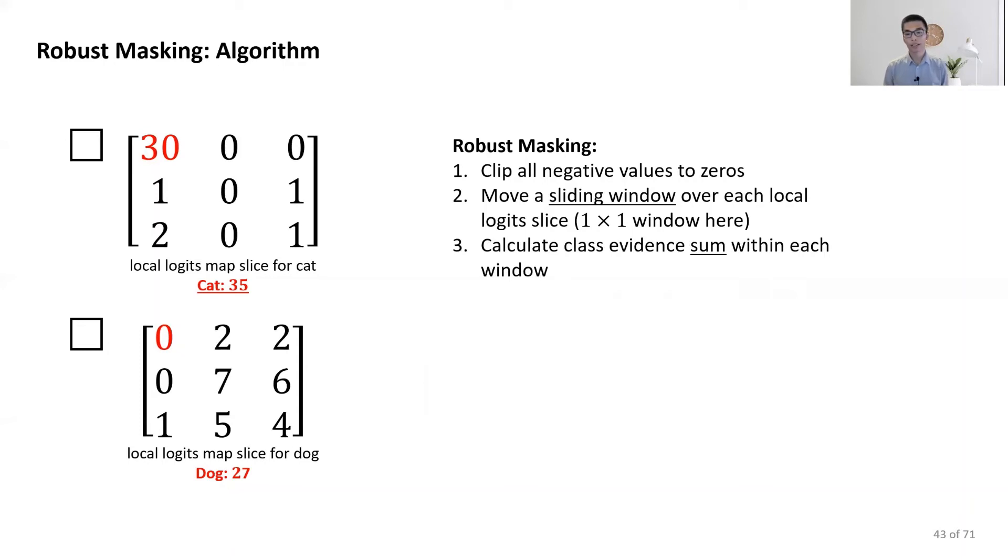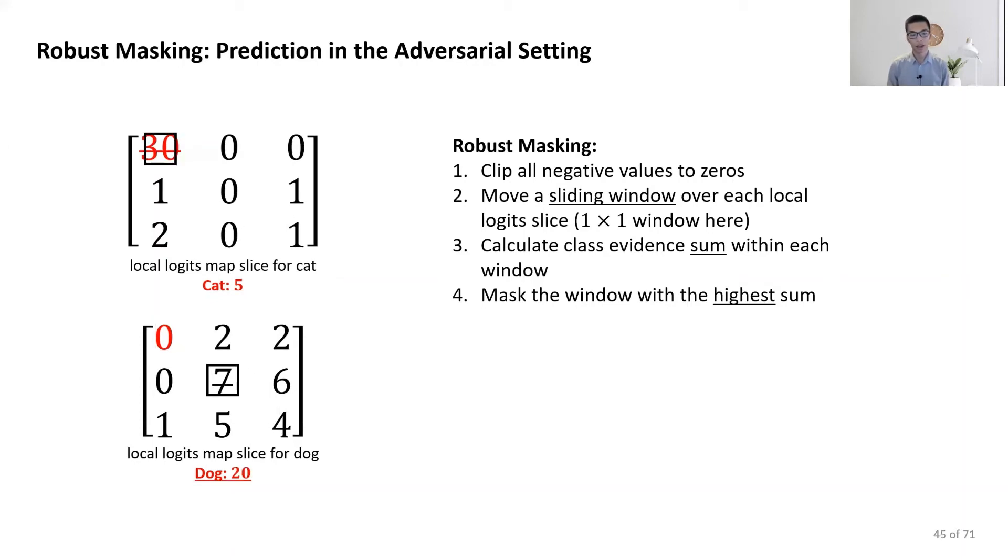Then, we calculate the class evidence sum within each window and mask the window with the highest sum. See some examples. For the cat feature map, we find it's 30. For the dog, we find it's 7. After masking them, we can recover the correct prediction. Here, the observation is that the adversarial prediction is subject to our feature masking.